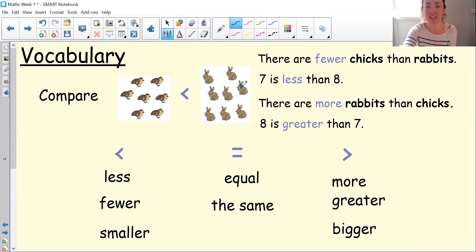For an example here, we've got some chicks and some rabbits. We've got the chicks are the first picture. There are seven chicks. And in the second picture, there are one, two, three, four, five, six, seven, eight rabbits. In this example, we can see that seven is less than eight. So there are fewer chicks than rabbits. Seven is less than eight. There are more rabbits than chicks. Eight is greater than seven.